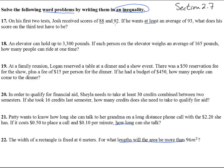Josh receives scores of 88 and 92, and he wants at least an average of 93. What does his score on his third test have to be? Okay, so for the third test, let's do G for grade. So if we take the average of 88, 92, and G, that's 88 plus 92 plus G all divided by 3. That has to be at least 93, that's greater than or equal to 93.